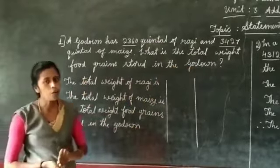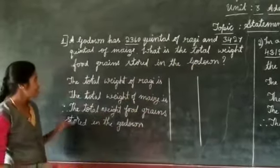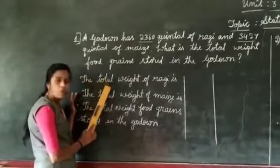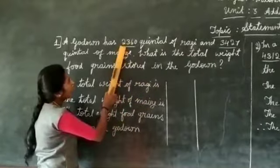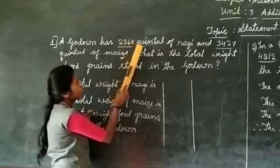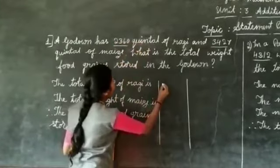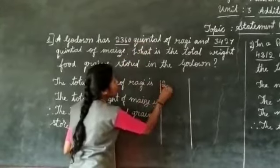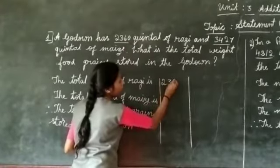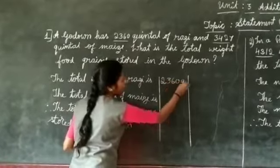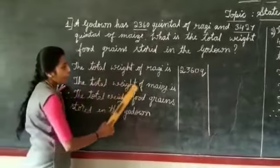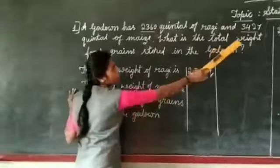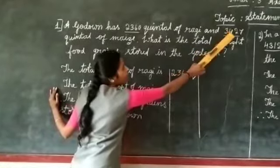Now, we have to write the sentence. The total weight of ragi is 2360 quintal. Now, we have to write this number. 2360 quintal. Next, the total weight of maize is 3427.